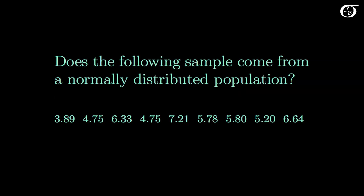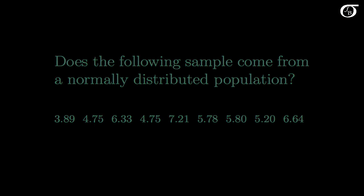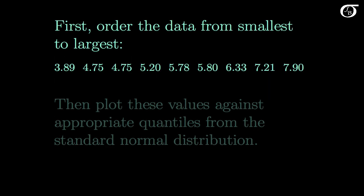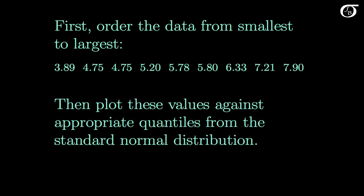Now let's work through some of the details in how a normal quantile-quantile plot is constructed. Does the following sample come from a normally distributed population? First we're going to order the data from smallest to largest, and then we're going to plot these values against the appropriate quantiles from the standard normal distribution.